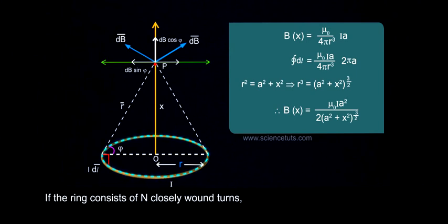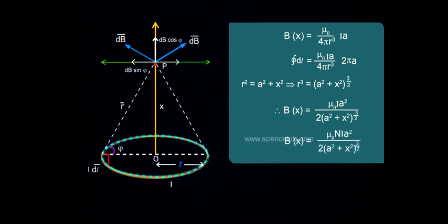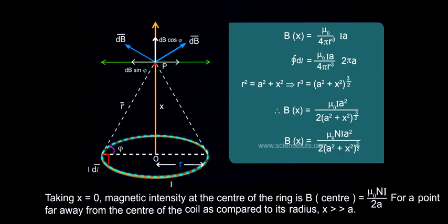If the ring consists of n closely wound turns, Bx equals mu_0 n i a² by 2 into (a² plus x²) to the power 3/2.